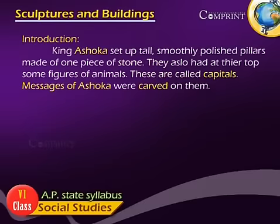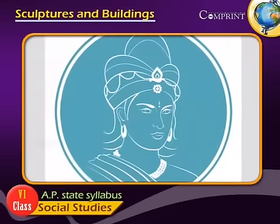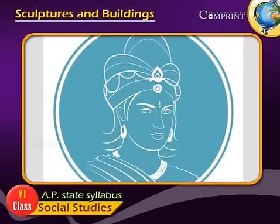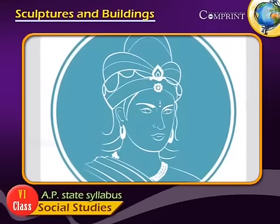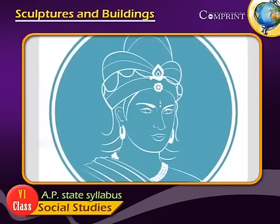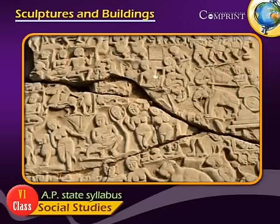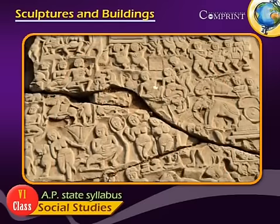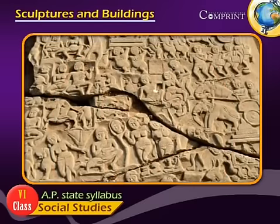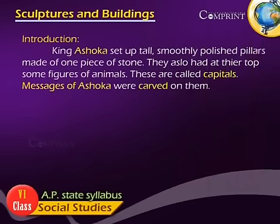King Ashoka set up tall, smoothly polished pillars made of one piece of stone. They also had at their top some figures of animals. These are called capitals. Messages of Ashoka were carved on them.